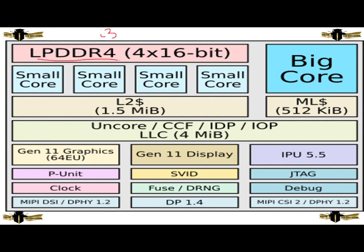This is the architecture of Intel i3 processor. LPDDR4 at 4x16 bits is connected to the small cores and to the Uncore LCC, which is connected to graphics, P units, clock and general event display, SVID, TNG, DP1.4 and IPU 5.5, JTAG, DEBUG, MIPI, CSI-2 or DPHY 1.2. These are connected to the big cores.